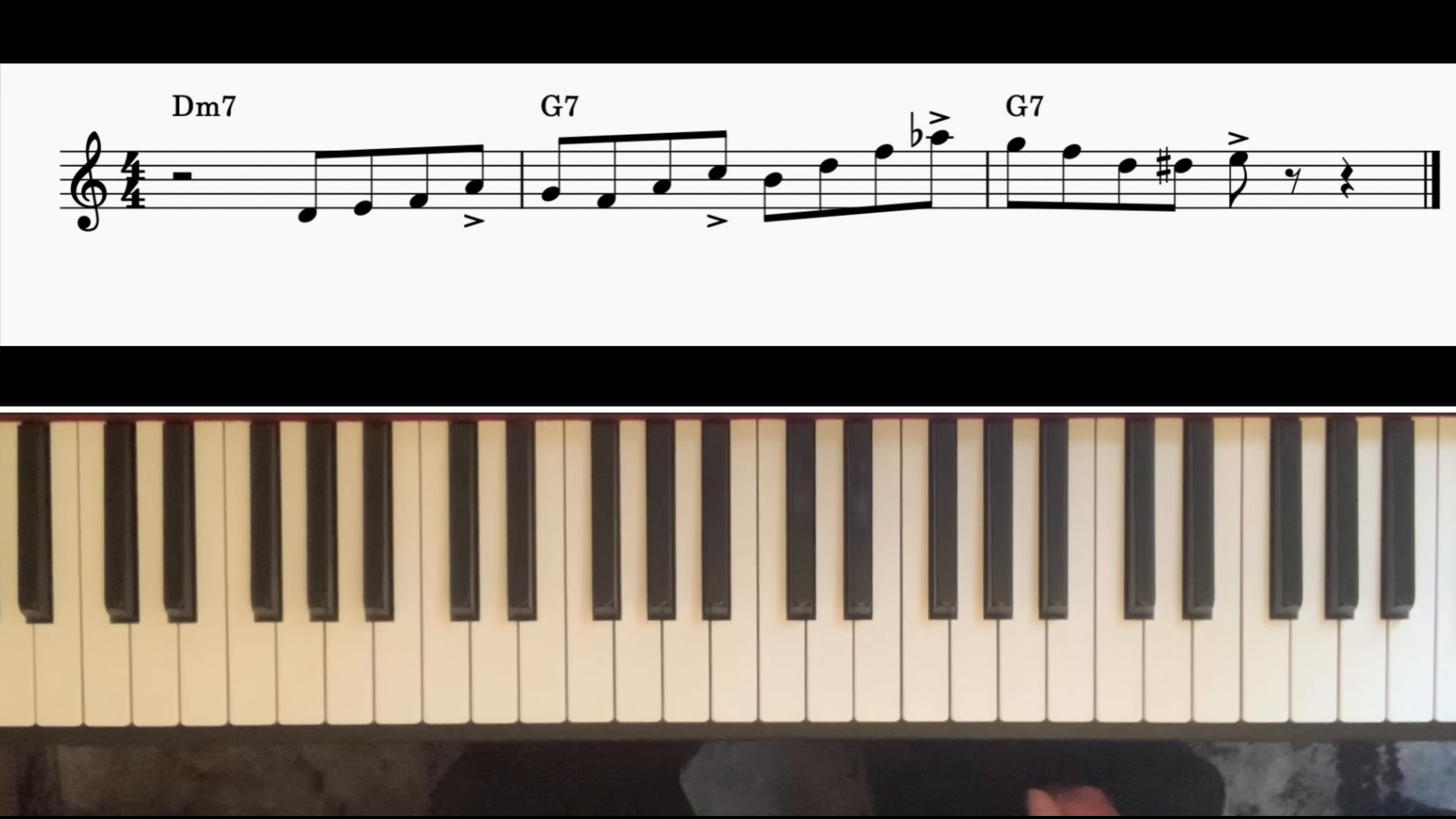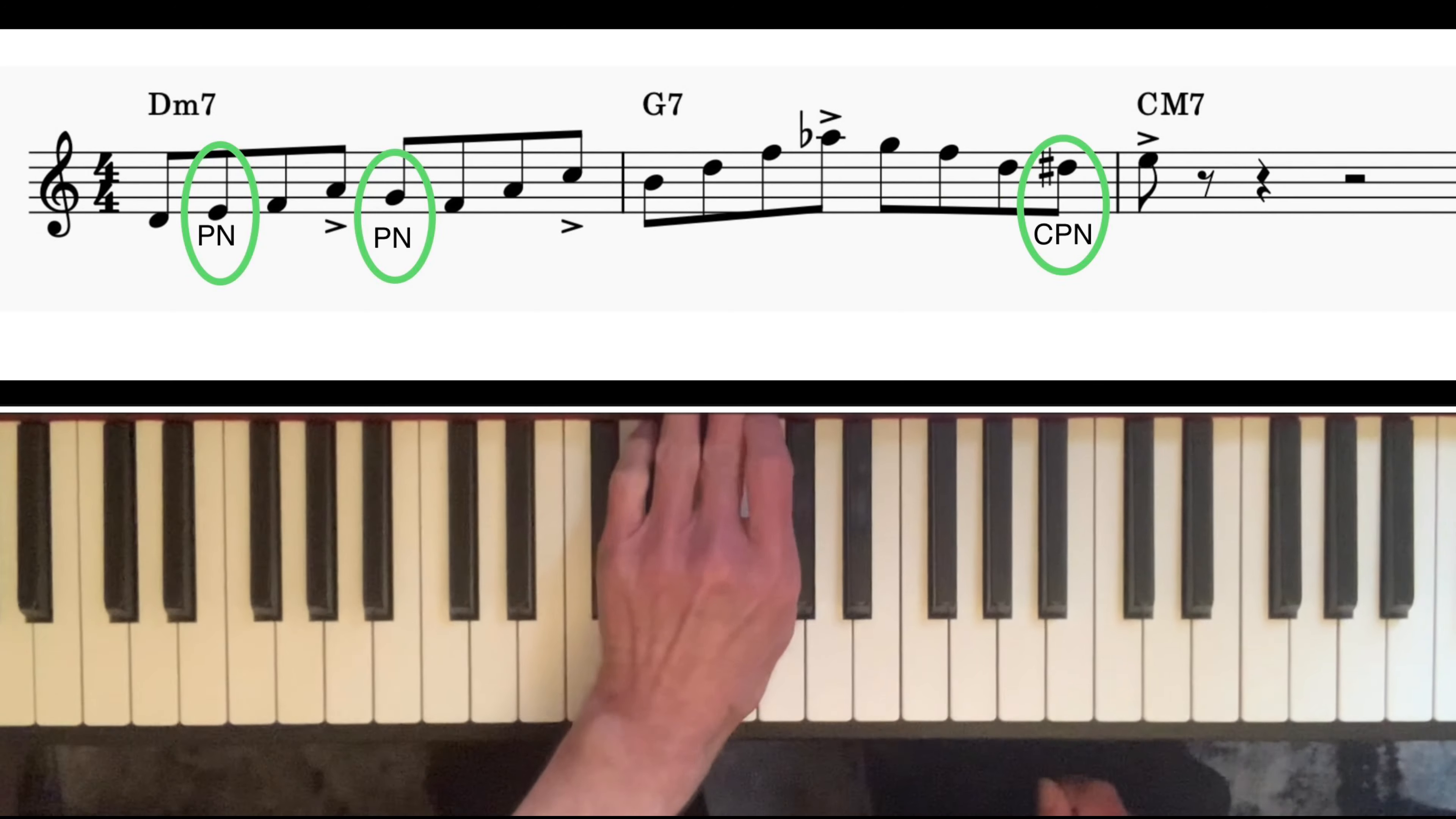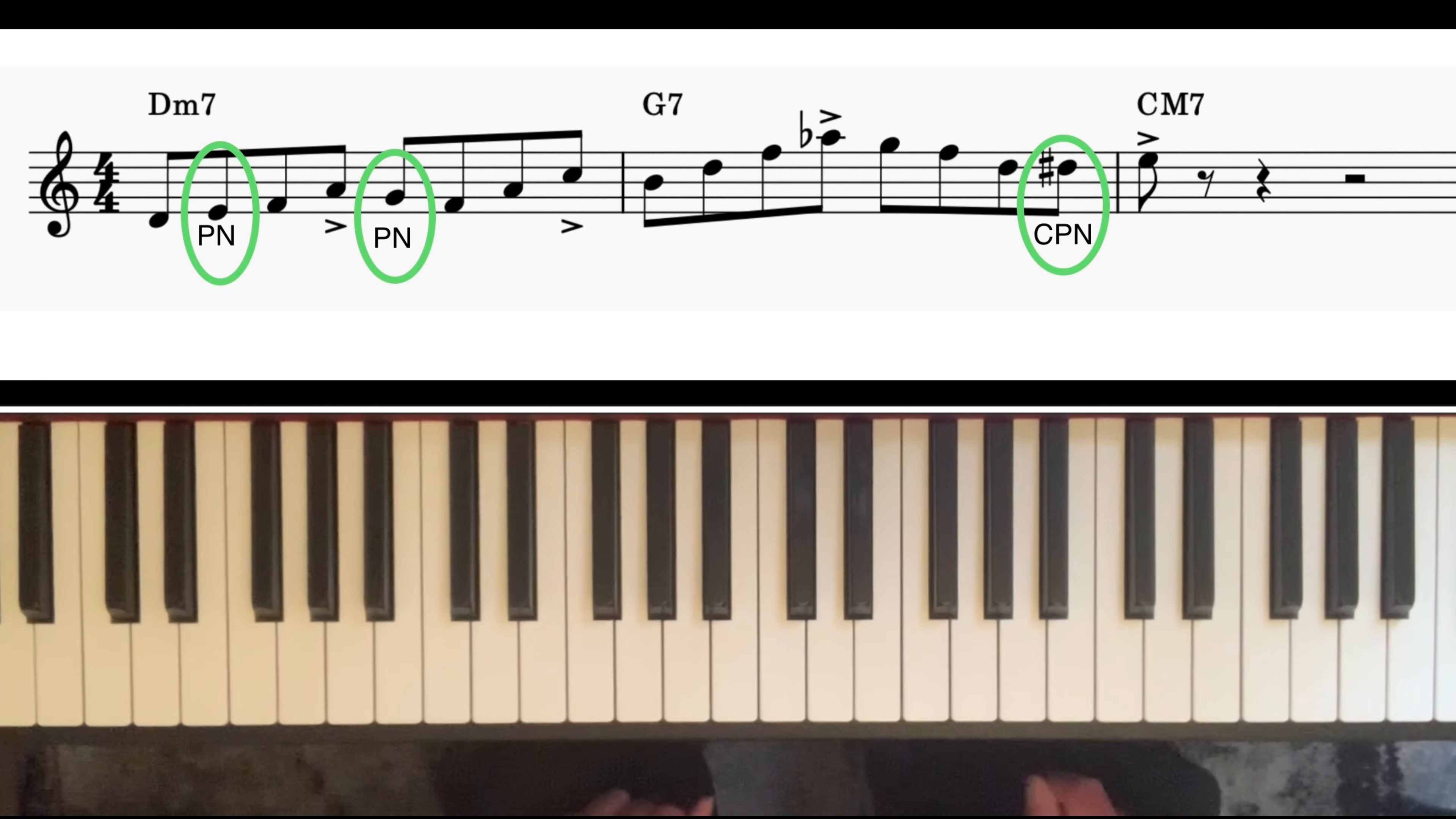Hi, in this tutorial I want to talk about the use of rhythmic and octave displacement in an improvised line. Let's look at the first example that I played. The chord progression was D minor 7, G7, C major 7, which is a 2-5-1 chord progression in the key of C major.